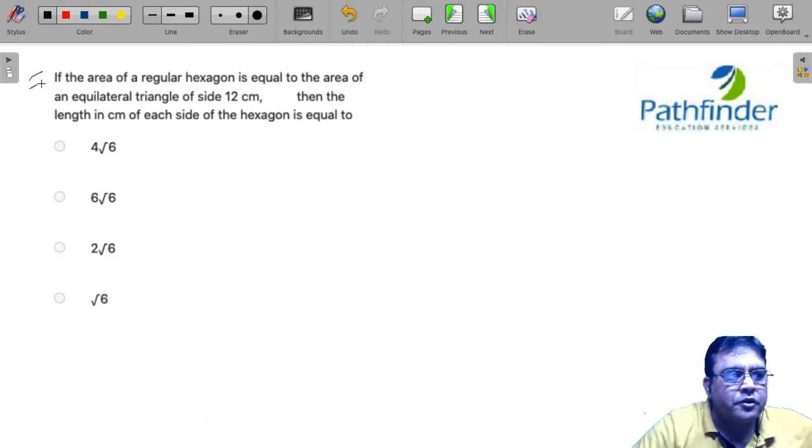This is a question of geometry. If the area of a regular hexagon is equal to the area of an equilateral triangle of side 12 centimeters, then the length in centimeters of each side of the hexagon is.